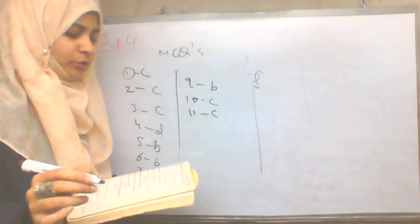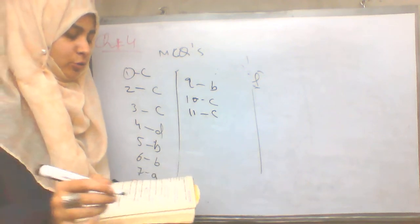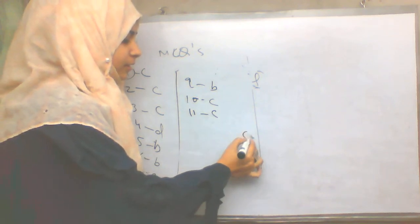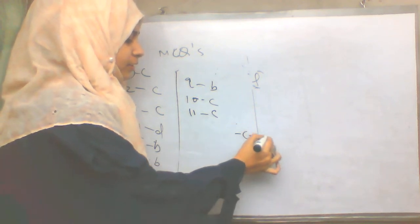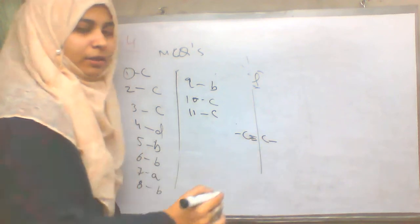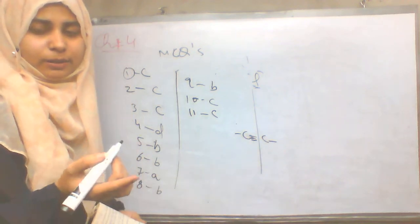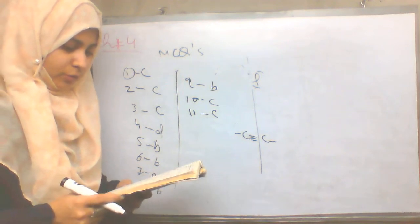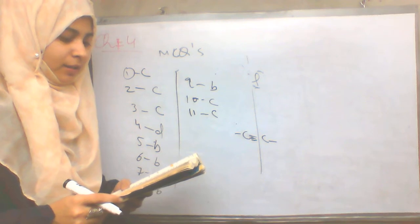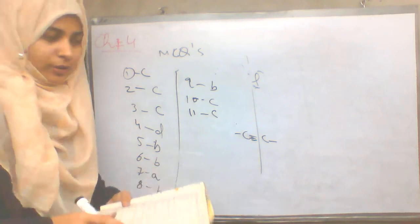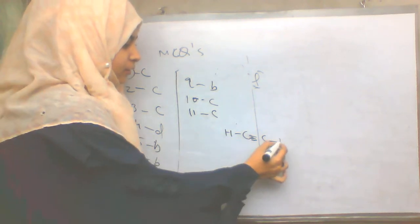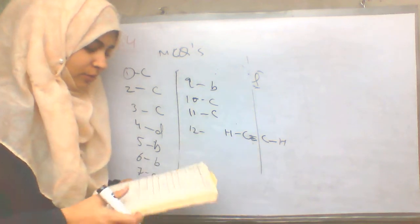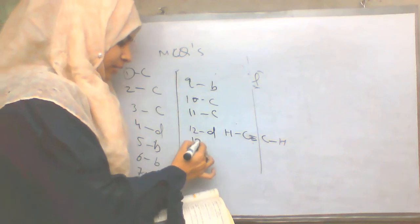Question 12: How many covalent bonds does C2H2 have? C2H2 is an example of ethyne, an alkyne. Counting the covalent bonds: 1, 2, 3, 4, 5 — so the answer to question 12 is D.